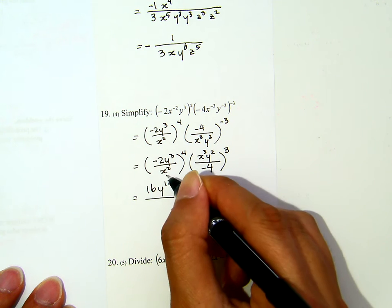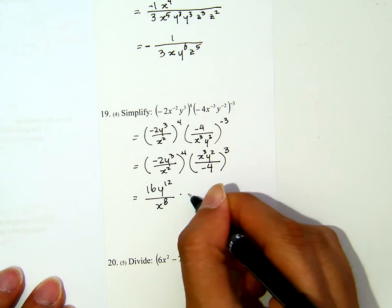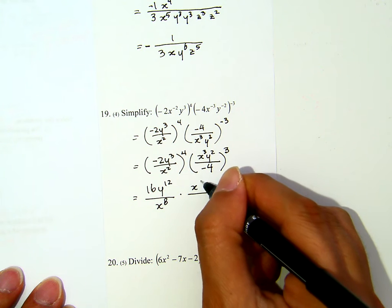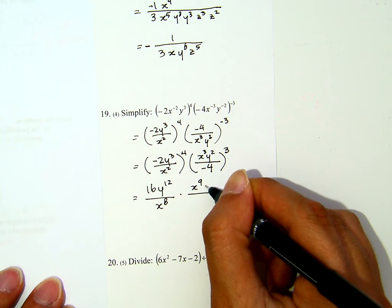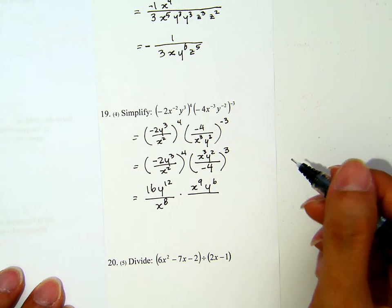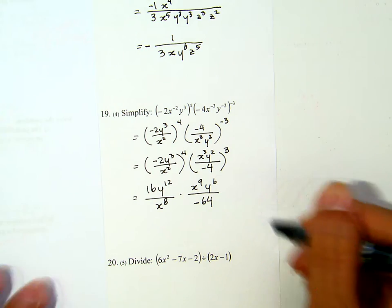Times x cubed is x to the 9. Y squared cubed is y to the 6 over negative 4. Negative cube is negative 4 cubed is 64.